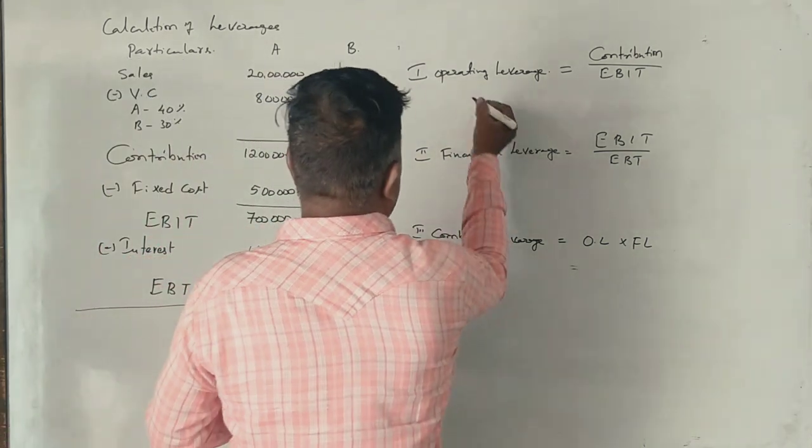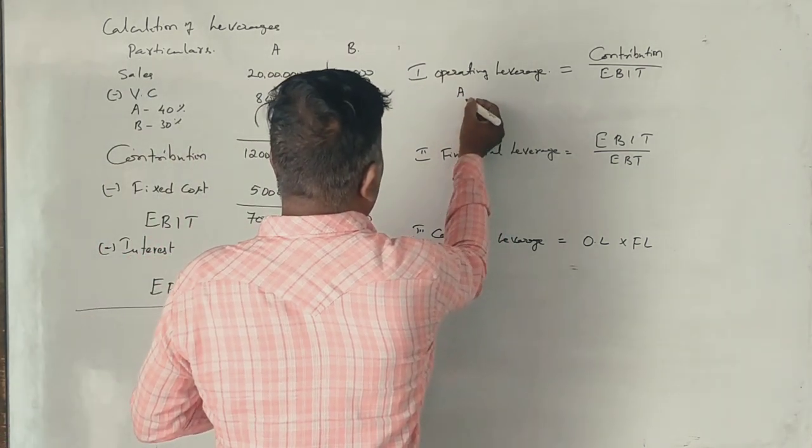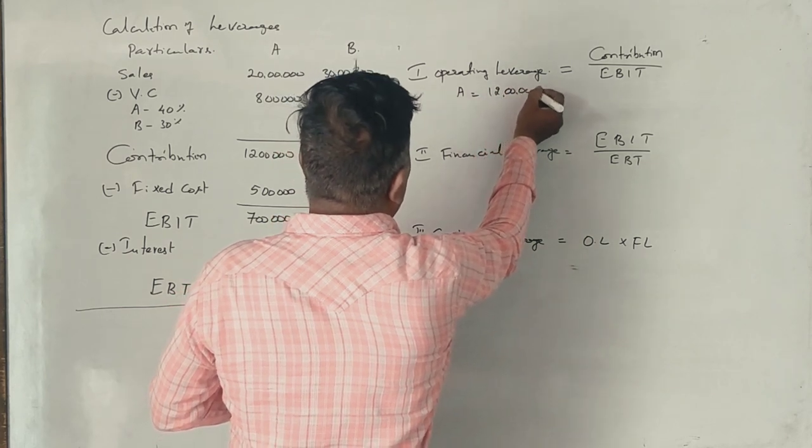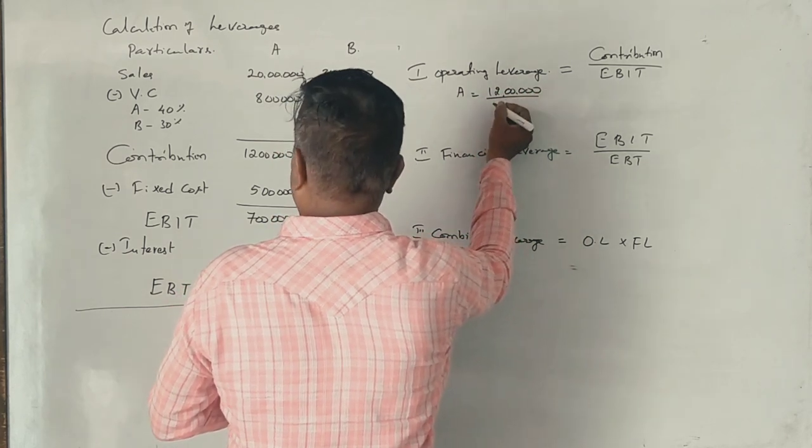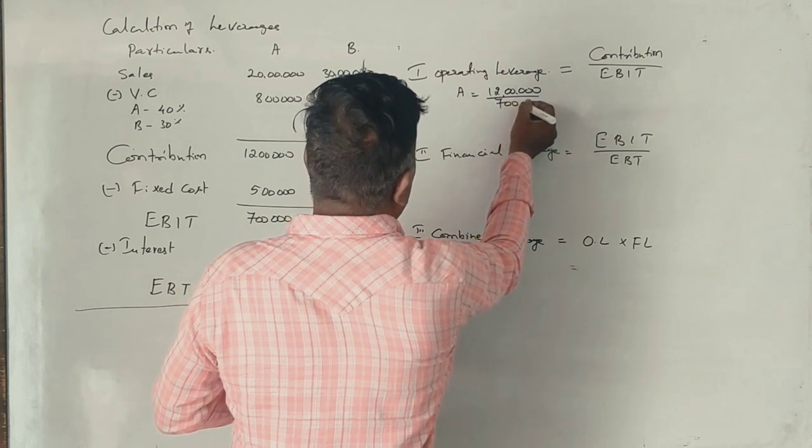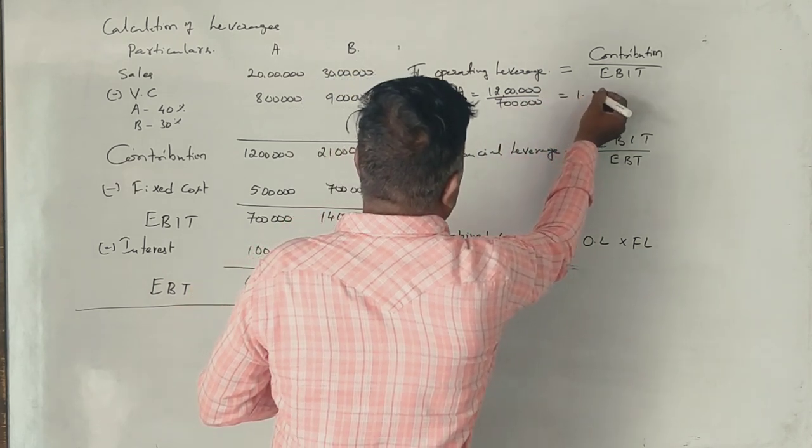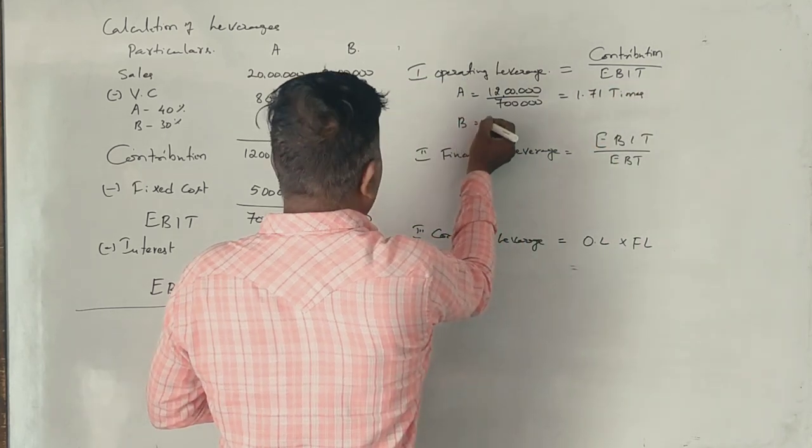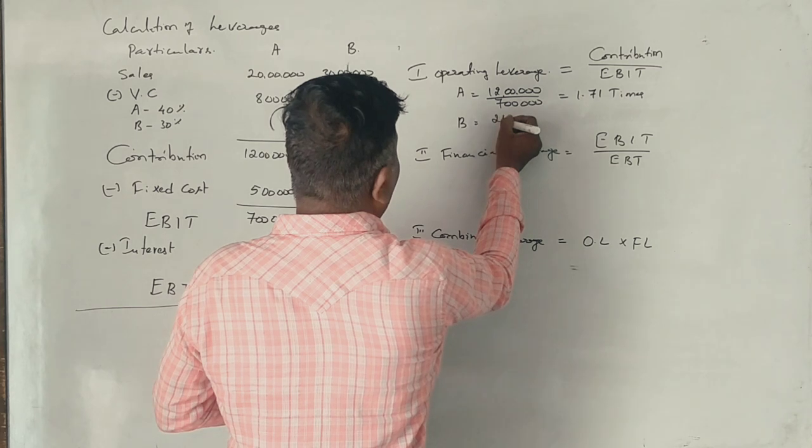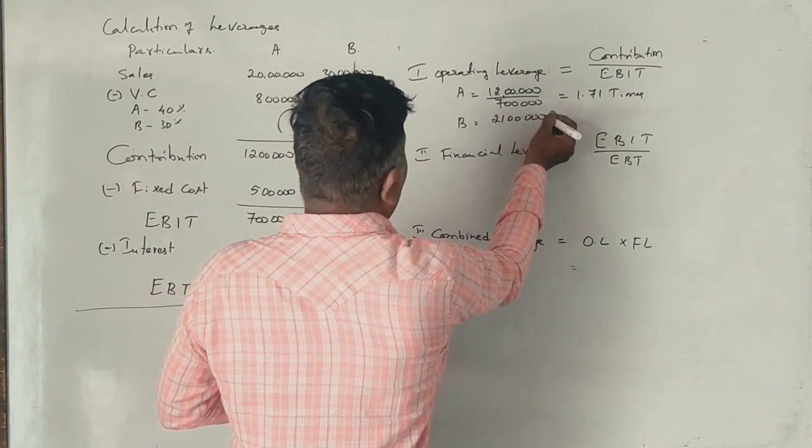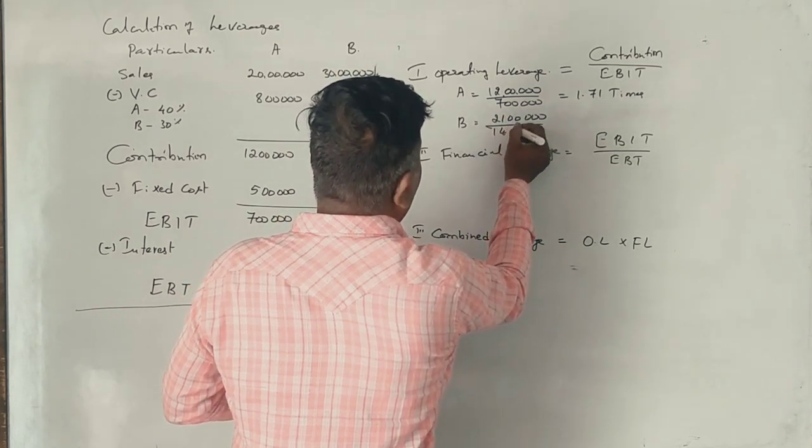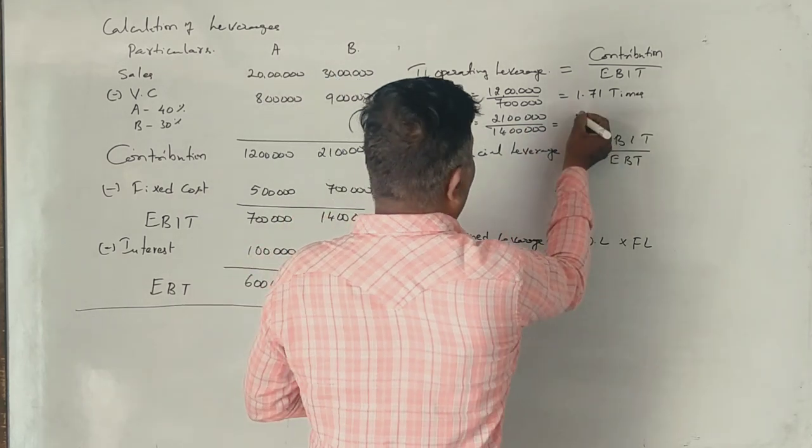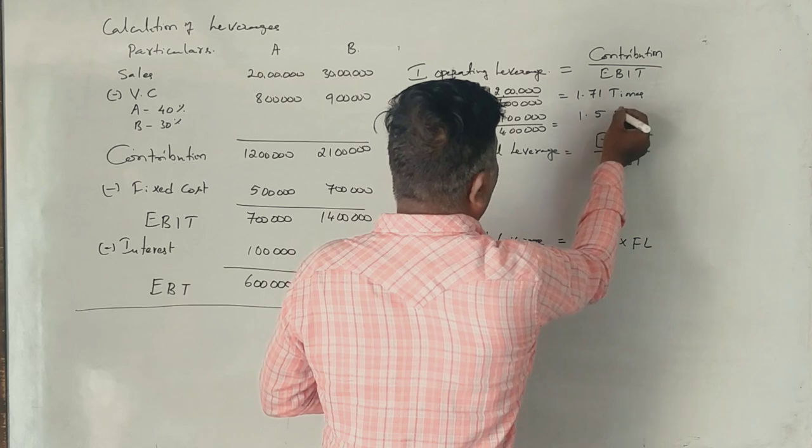This is 1.71 times. For Firm B, 21 lakhs divided by 14 lakhs, this is 1.5 times.